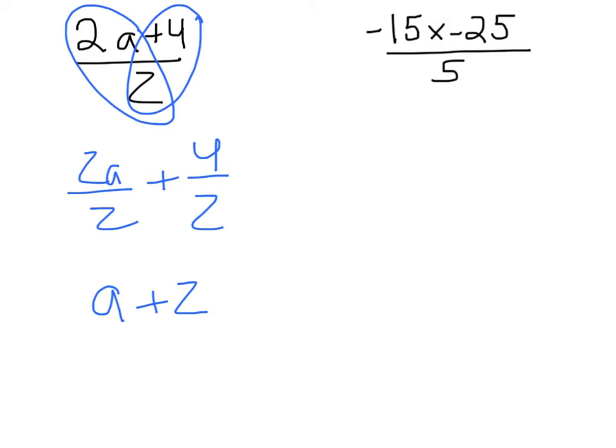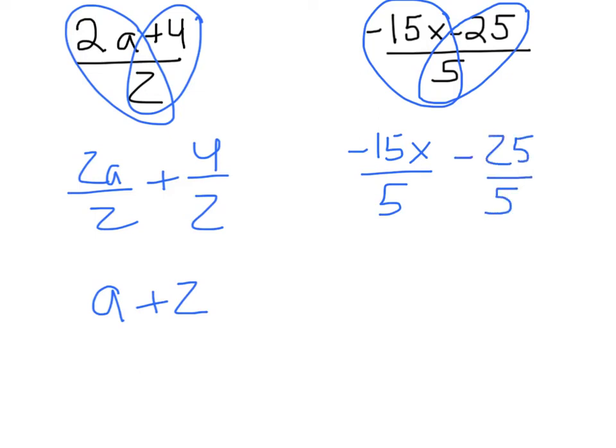So we have negative 15x over 5, so I'll write that as my first term. And then my second term, I have to be careful to keep this negative sign with the 25, so I have combined with negative 25 over 5. Then I can simplify to negative 3x combined with negative 5.